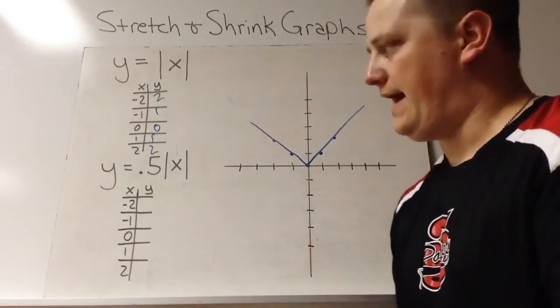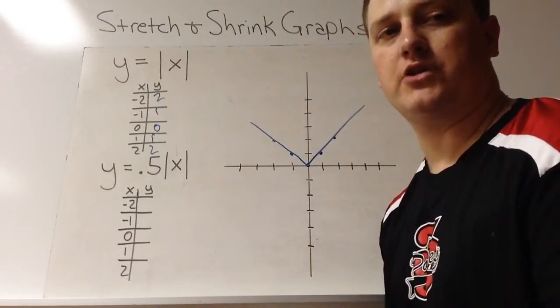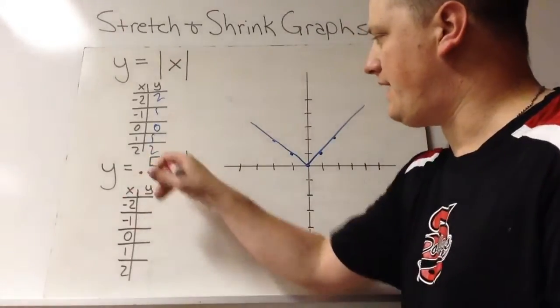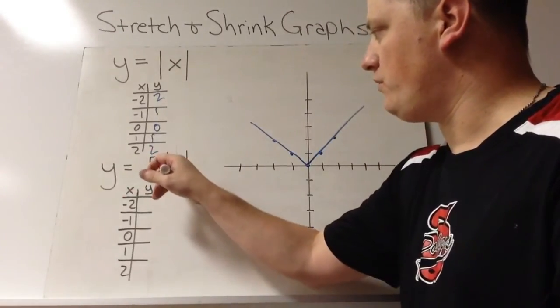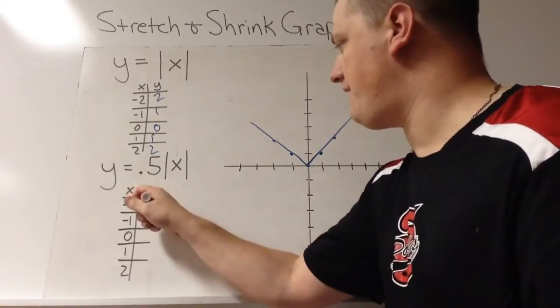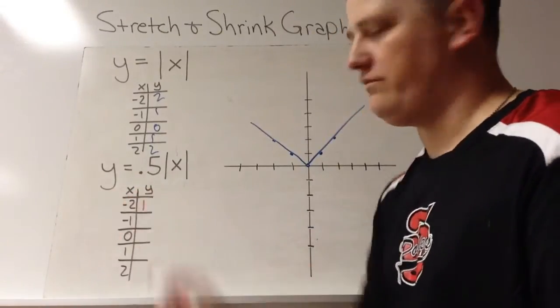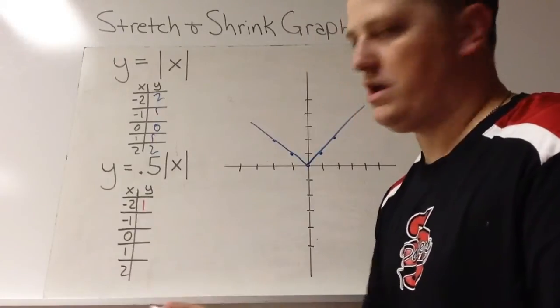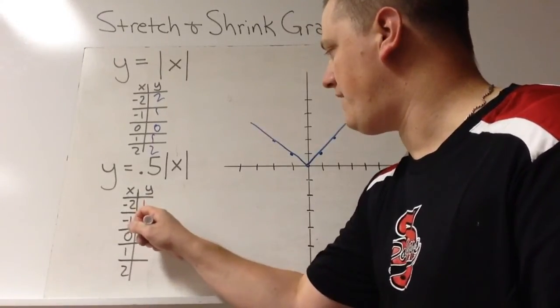Now let's look at the vertically shrunk one. We've got negative 2, it's going to be 2. Absolute value of negative 2 is 2, 2 times 0.5 is 1. Absolute value of negative 1 is 1, times 0.5 is 0.5.